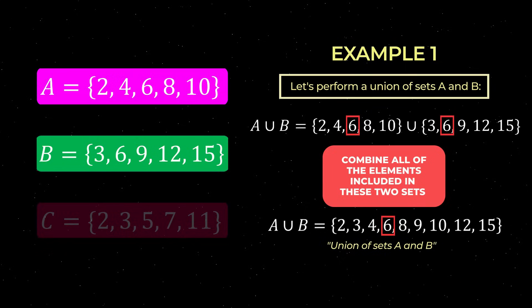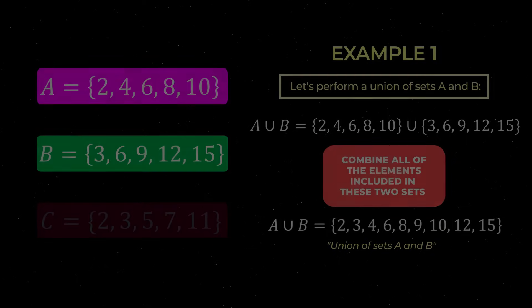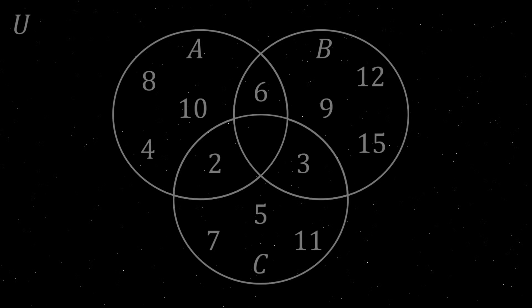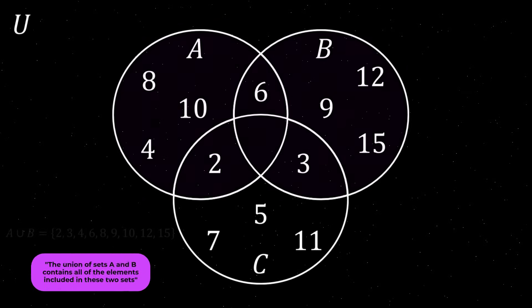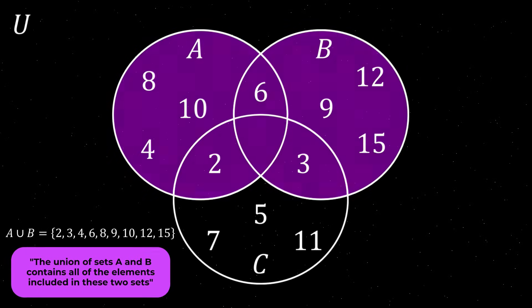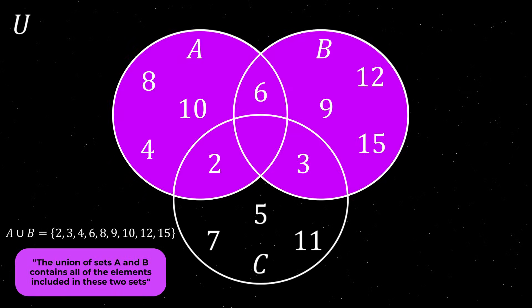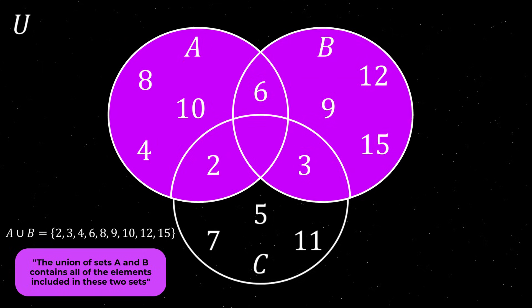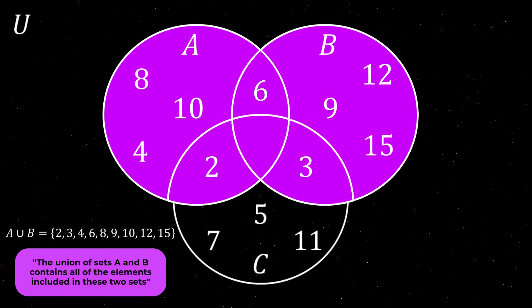Let's now illustrate this union of sets A and B on a Venn diagram. As you can see, the union of sets A and B is the area occupied by both of these sets.